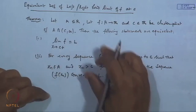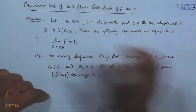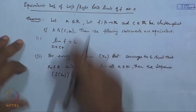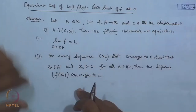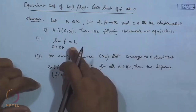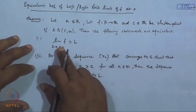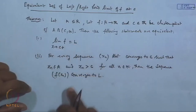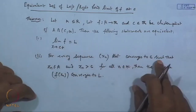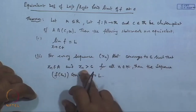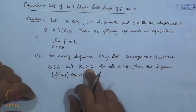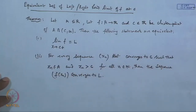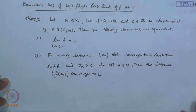Similarly, for the left-hand limit: if there exists a sequence (x_n) with x_n < c for all n that converges to c, and f(x_n) converges to L, then lim(x→c⁻) f(x) = L. This is the equivalent sequential definition for one-sided limits.